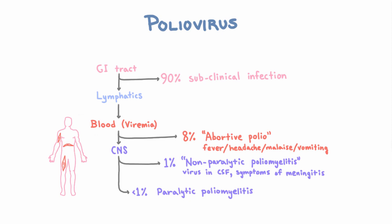But we don't only have lower motor neurons in the spine — we also have them in the brainstem. These are the lower motor neurons that make up the cranial nerves, and it turns out poliovirus can actually infect these too. When it does, we call it bulbar poliomyelitis, where bulbar means in the brainstem. This is rare and actually more serious, since it can make people unable to swallow, breathe, and so on. And 50% of people with bulbar poliomyelitis die.